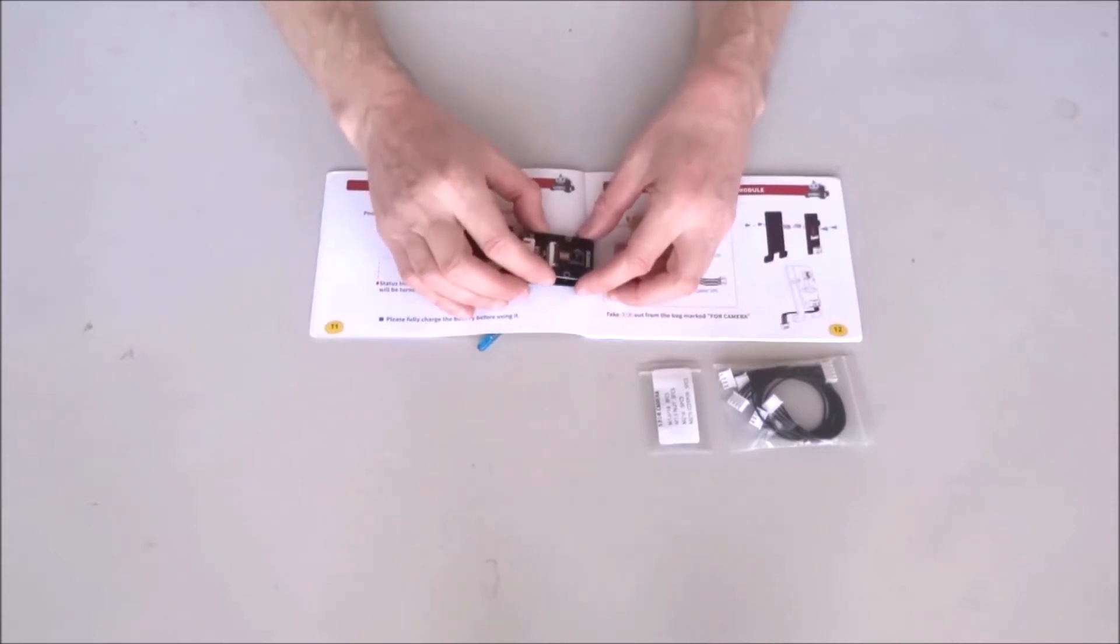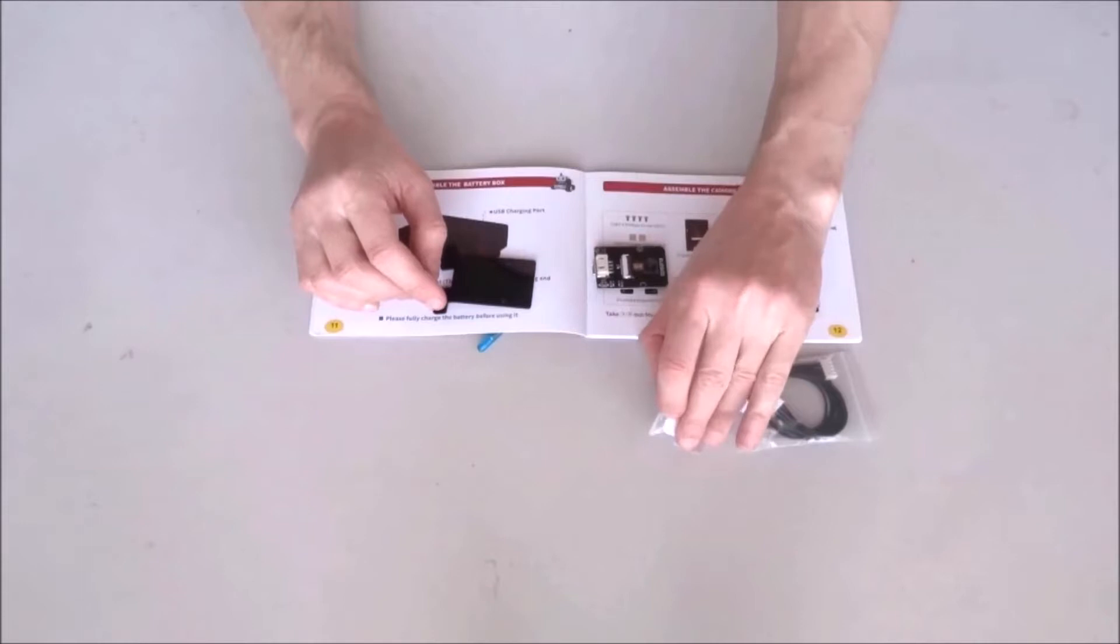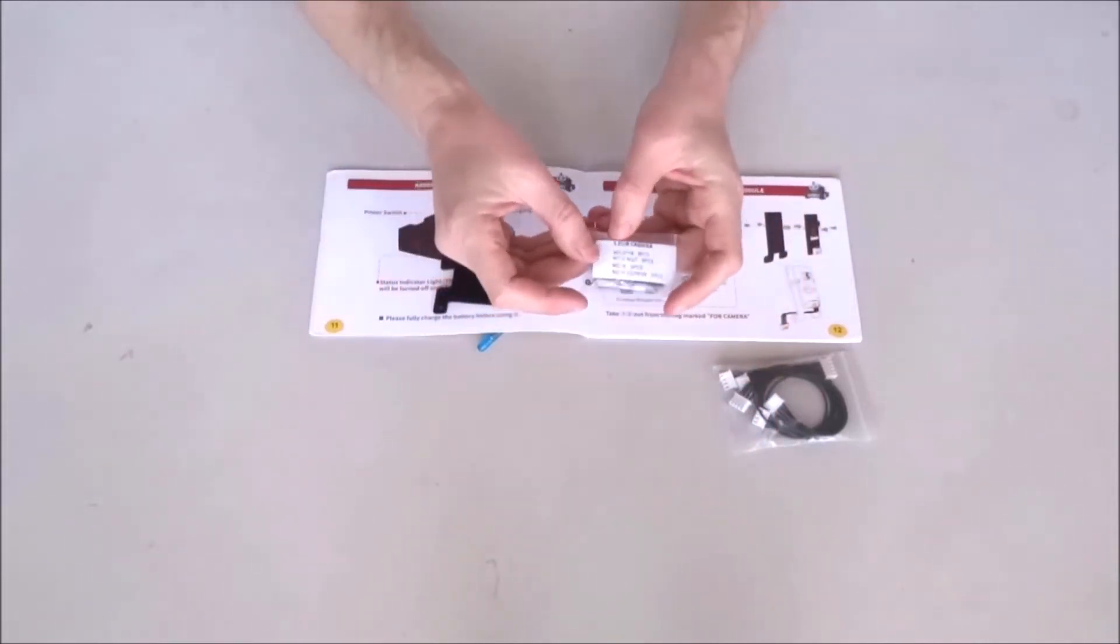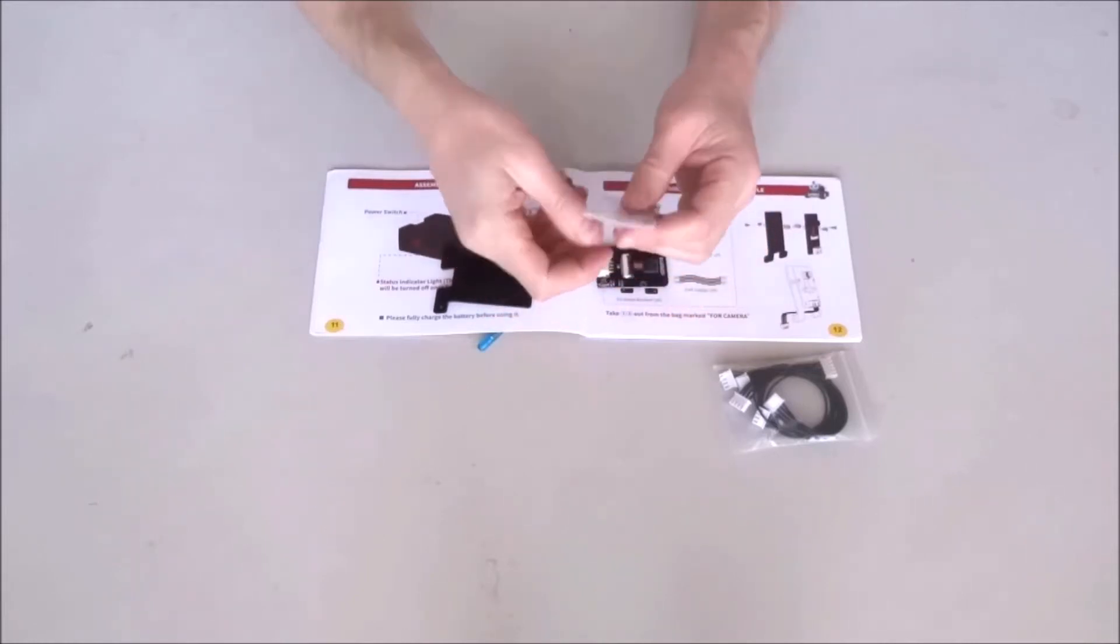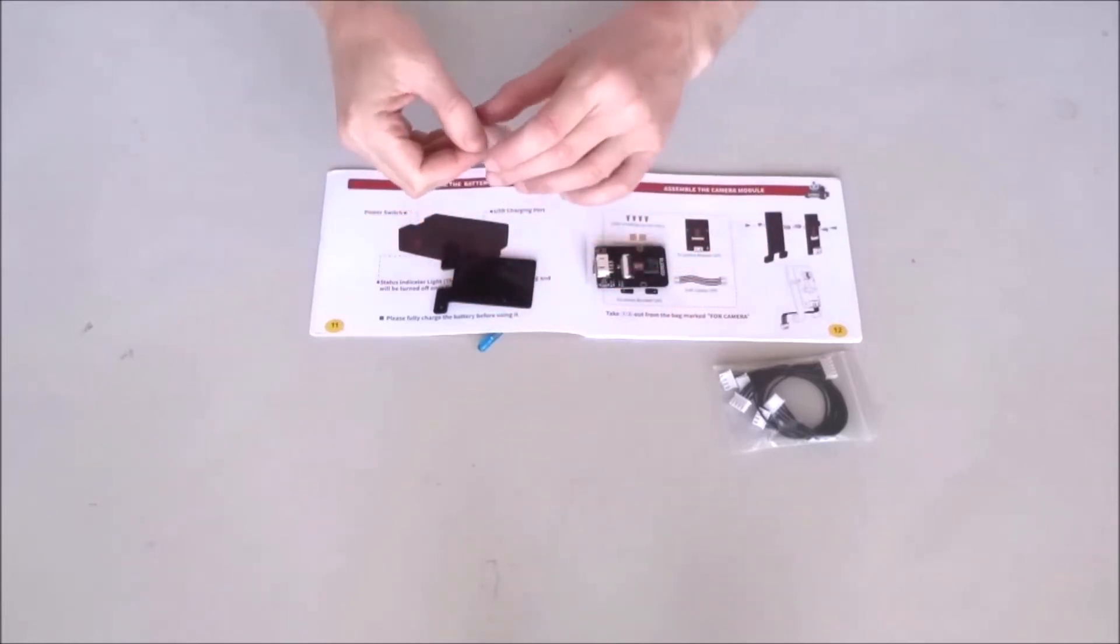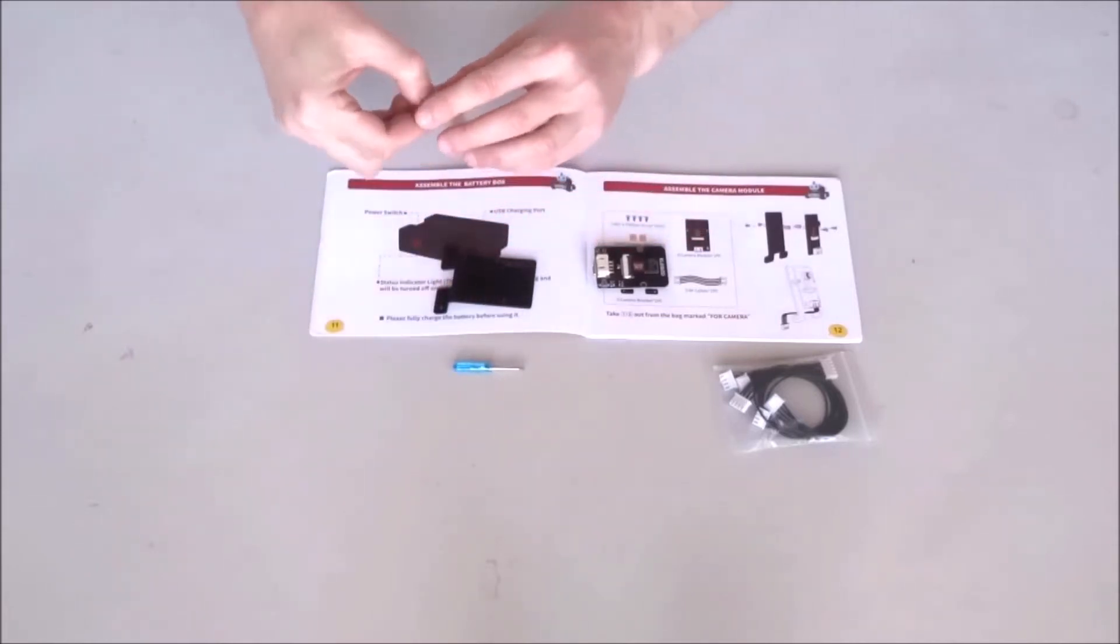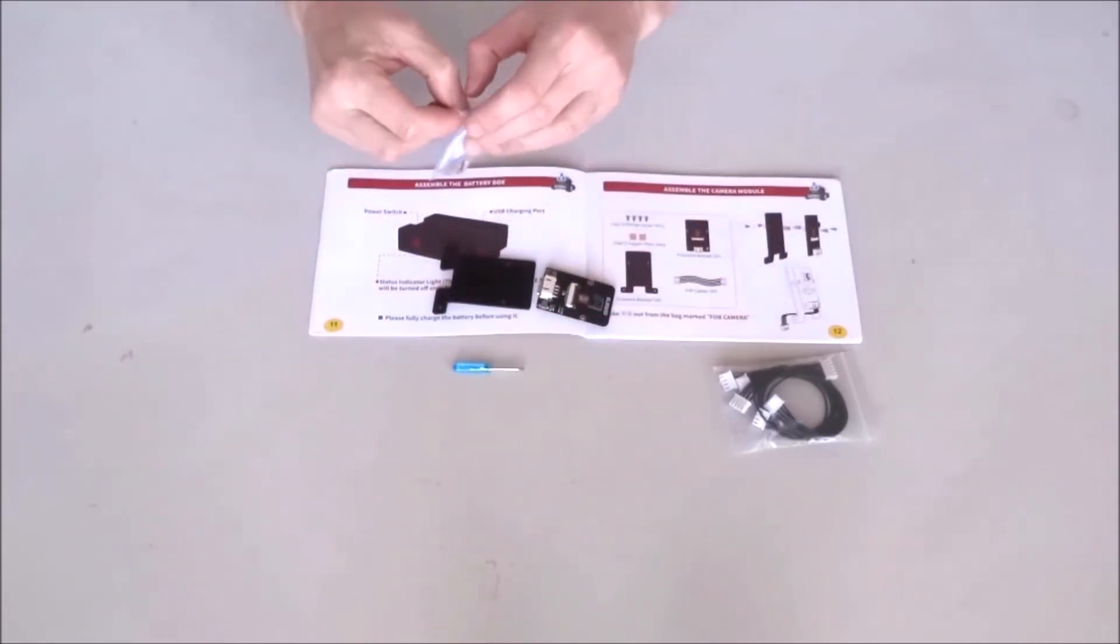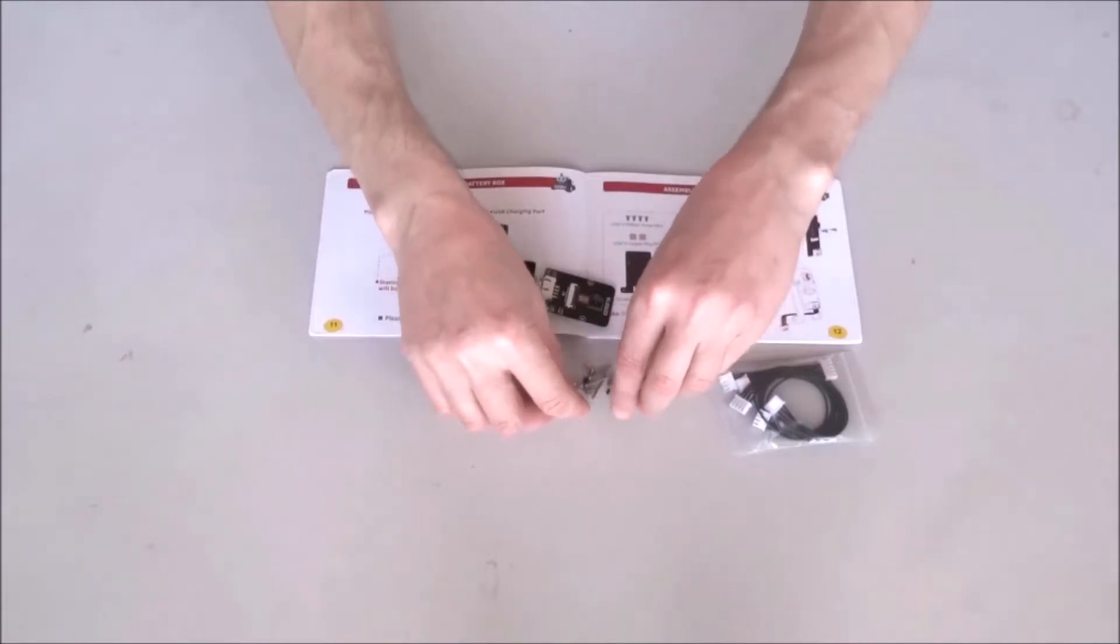So the module will be installed like this on the plastic plate. We'll need this bag number 5, which says 5 for camera. From this bag, we'll need 2 M2x6 copper pillars standoffs. I'll take all the parts out so we can pick easier.